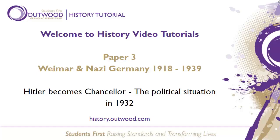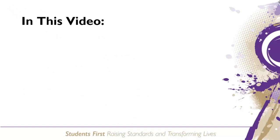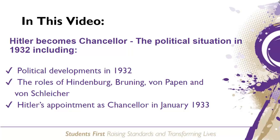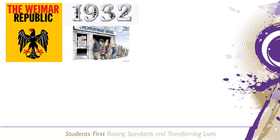Hello and welcome to this history tutorial on how Hitler became Chancellor of Germany. This is for Edexcel GCSE, Weimar and Nazi Germany. Today we will cover the political situation in 1932 and how political developments in this year led to the appointment of Hitler as Chancellor in January 1933.